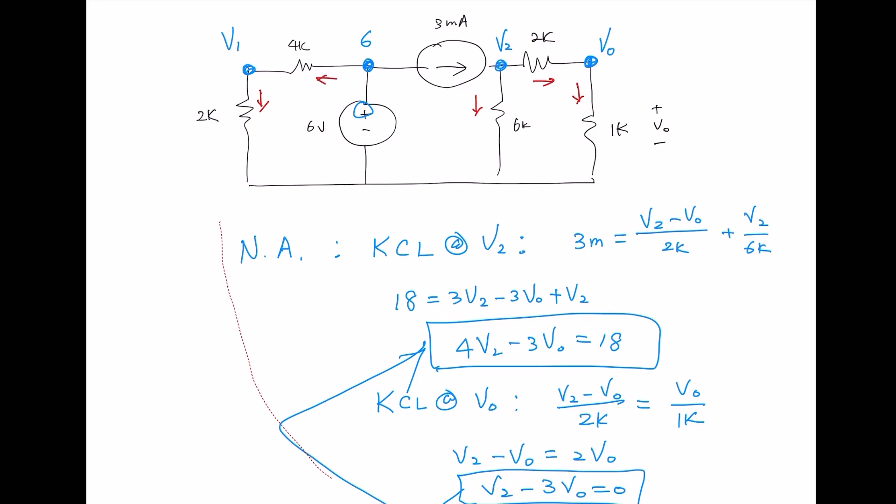So nodal analysis KCL at V1 then entering is 6 minus V1 over 4K equals leaving V1 over 2K.